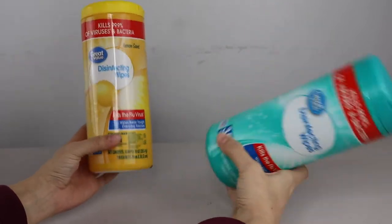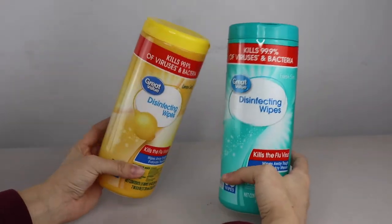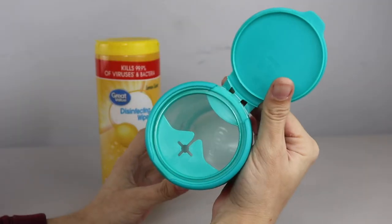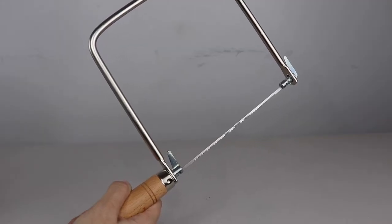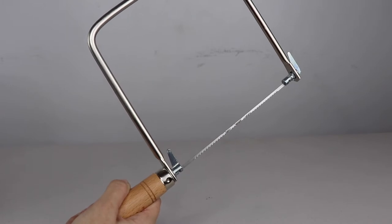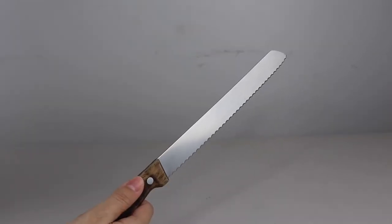A container to put them in. I'm using these empty containers that I've already used. Something to cut your paper towels in half. I use this small coping saw, but you can also use a sharp serrated blade such as this one.